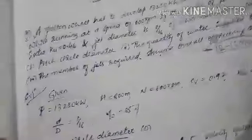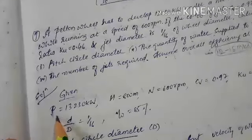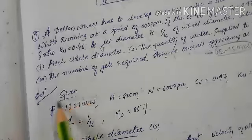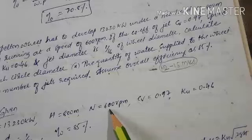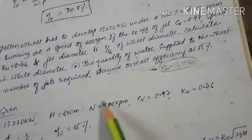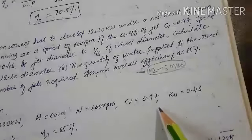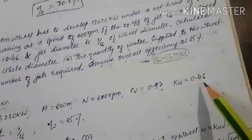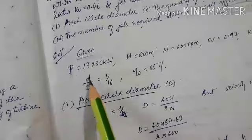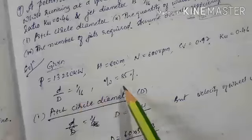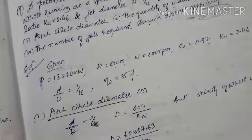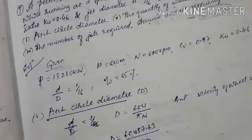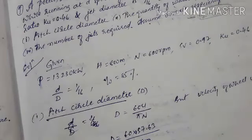Given data: shaft power = 13,030 kW, head H = 800 meter, runner speed N = 600 rpm, Cv = 0.97, speed ratio Ku = 0.46, jet ratio d/D = 1/16, overall efficiency = 85%. We need to calculate the pitch circle diameter, quantity of water supplied to the wheel, and number of jets required.